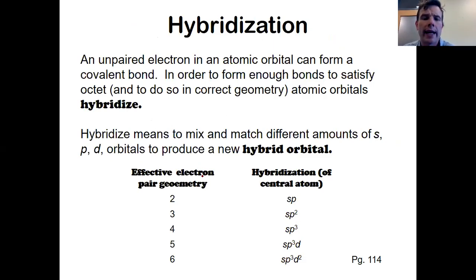Another thing that the lab report is going to ask you is the hybridization. So the idea here is that unpaired electrons in an atomic orbital can form a covalent bond. And in order to form enough bonds to satisfy the octet and to do so in the right geometry, atomic orbitals hybridize. They form hybrid orbitals. To hybridize means that you're going to mix and match different amounts of S, P, and D orbitals to form new hybrid orbitals. And I'm going to cut right to the chase here for you. The lab report will ask you to identify the hybridization of the central atom.